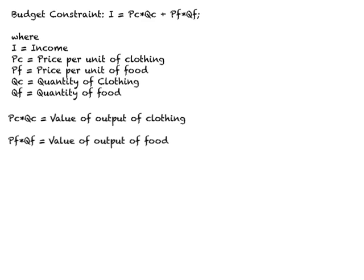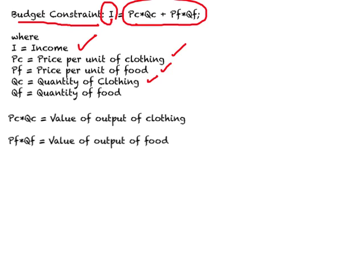In order to understand production equilibrium, we need information on the PPC as well as on the budget constraint. Let us quickly review what we learned about the budget constraint. The budget constraint is when income equals the total value of output, where I stands for income, PC is price per unit of clothing, PF is price per unit of food. Since we are looking at this from the production side, QC represents quantity of clothing produced and QF represents quantity of food produced.